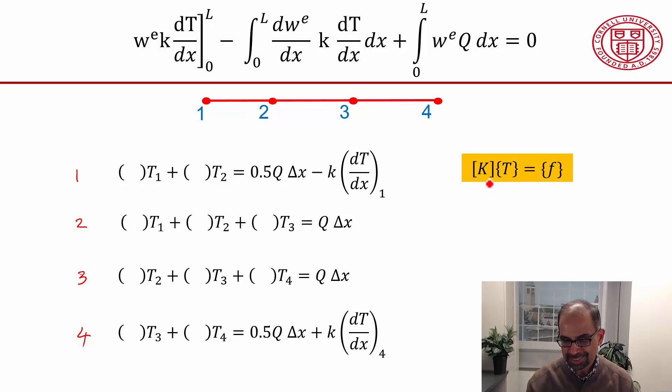And if I look at the stiffness matrix form, based on these coefficients here, I will enter them in the corresponding rows and columns of the stiffness matrix. For instance, this would go into the first row, first column, this coefficient of the stiffness matrix.